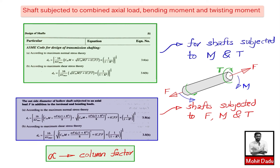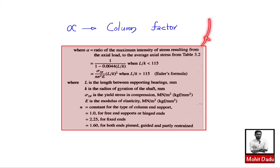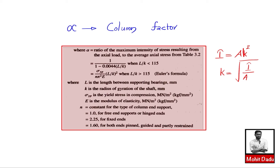The column factor alpha is found from Table 3.2 in the data book. It gives the ratio of intensity of stress resulting from the axial load to the average axial stress. The formula used depends on the value of l/k, where l is the length between shaft-supporting bearings and k is the radius of gyration. The radius of gyration k equals the square root of I/A, where I is the area moment of inertia and A is the cross-sectional area.